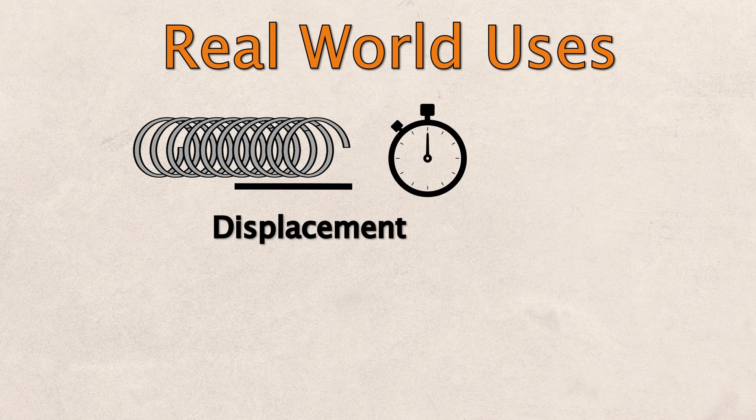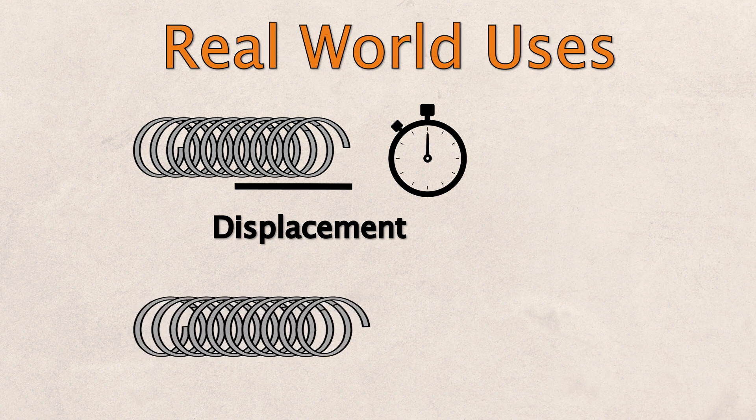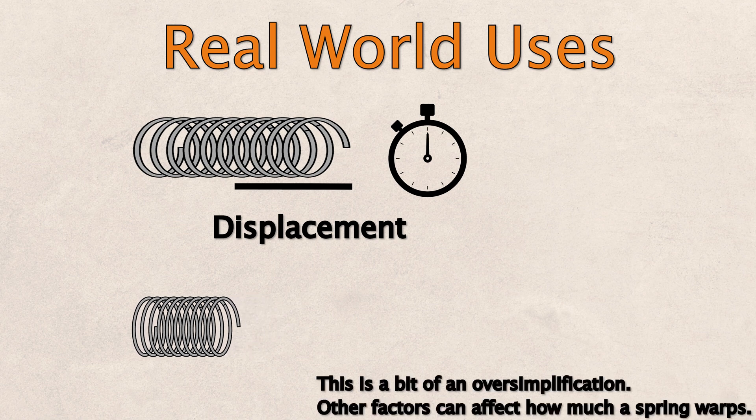For example, a spring that is stretched only a couple inches for a week may warp more than a spring that is stretched further for only a few minutes. The absement of the spring is directly related to the total strain.